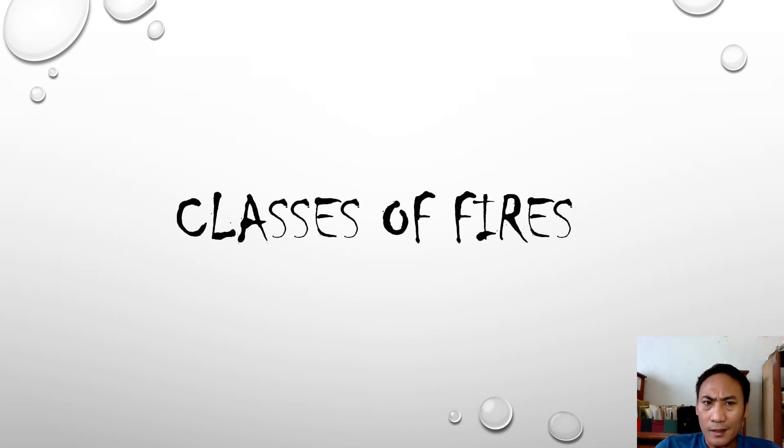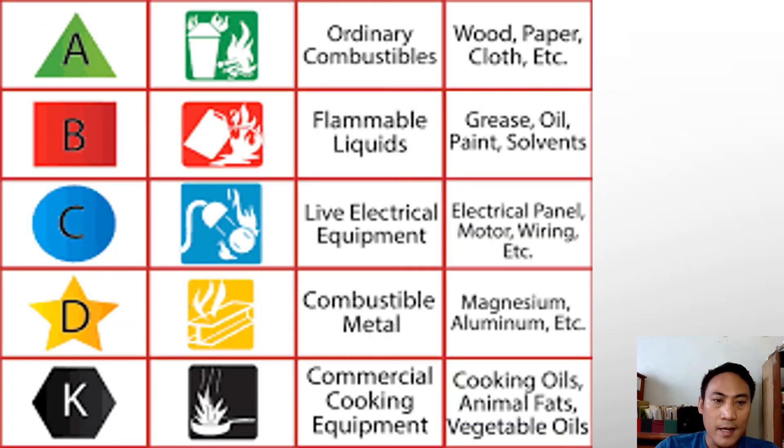What are the classes of fire? There are different classes of fire. We have A, B, C, D, and K. Class A are ordinary combustible materials such as wood, paper, cloth, and etc., or anything with thinking capacity because there's nothing else to think of.